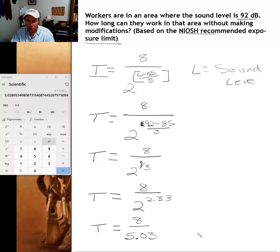And the last step in the calculation, all we need to do is divide 8 by 5.03, which equals 1.59 hours.